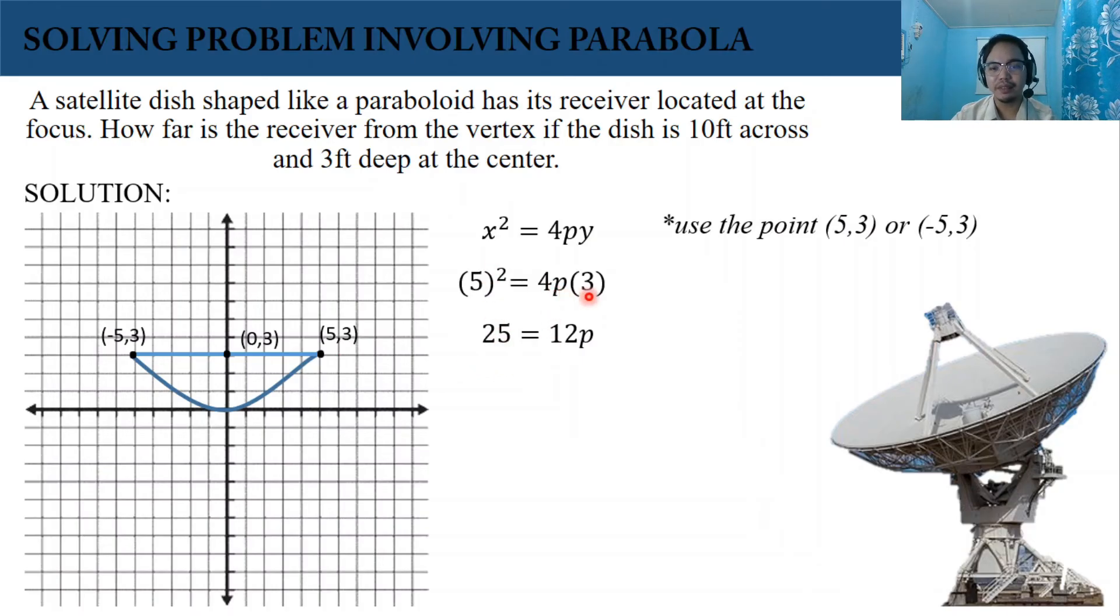4p times 3 is 12p. Just isolate p to find its value. We have 25/12, which simplifies to 2 and 1/12 feet, or approximately 2.08 feet.